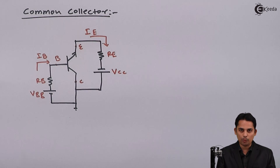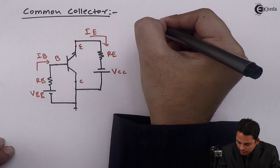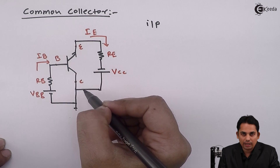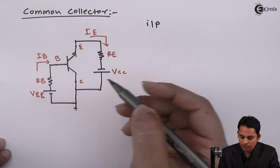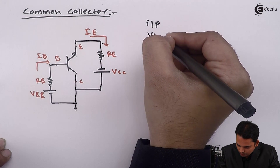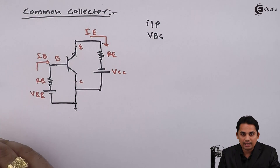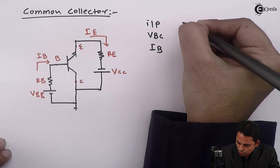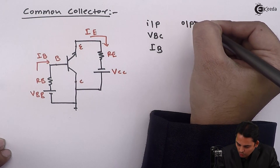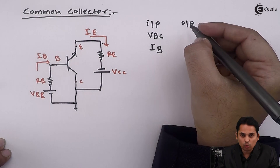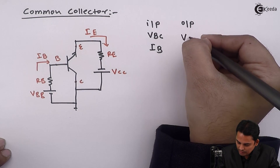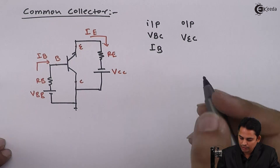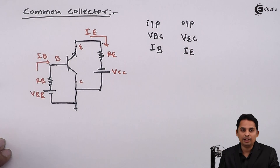The input is between base and collector, that is voltage VBC, and the input current is IB. For the output, the voltage is between emitter and collector, called VEC, and the output current is IE.